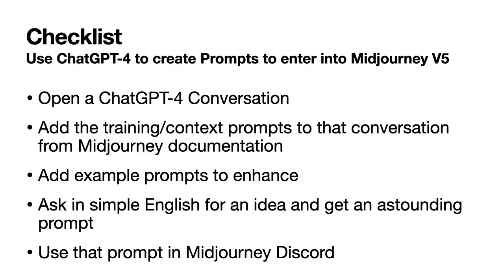So what do you have to do to get a really great prompt out of MidJourney version 5, which just came out in March of 2023? First, open a ChatGPT-4 conversation, add context and training to that conversation — I'll talk about that in a second — and then give it some example prompts that it can learn from. Once that's done, just ask in simple English for your core idea, and you're going to get what I like to call superhuman-level prompts. Then just copy and paste that prompt into the MidJourney Discord bot, which will create your images.